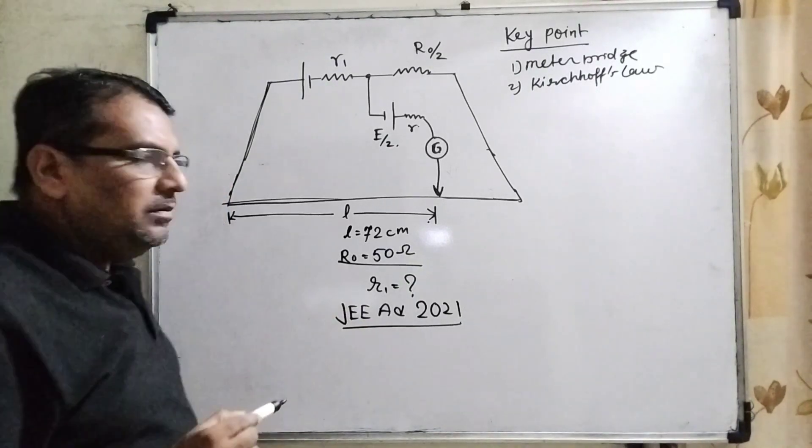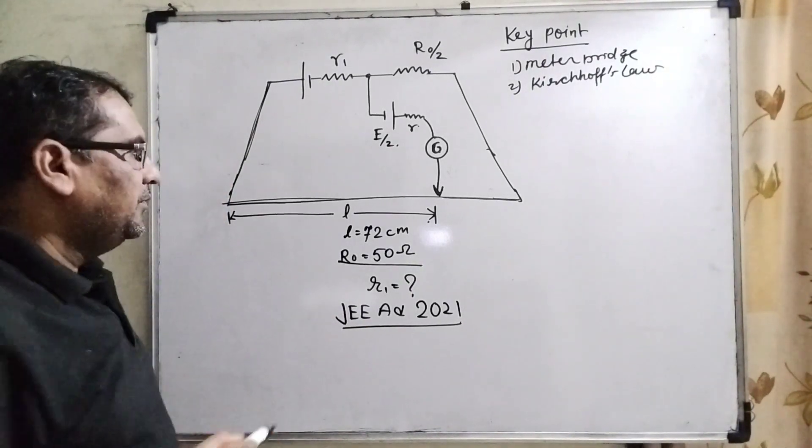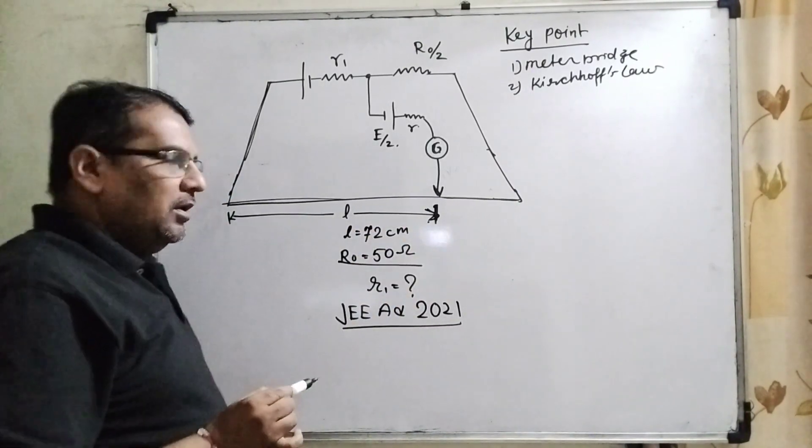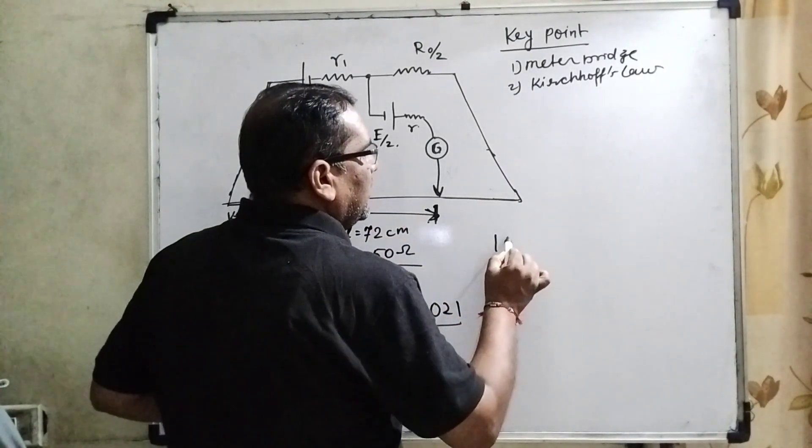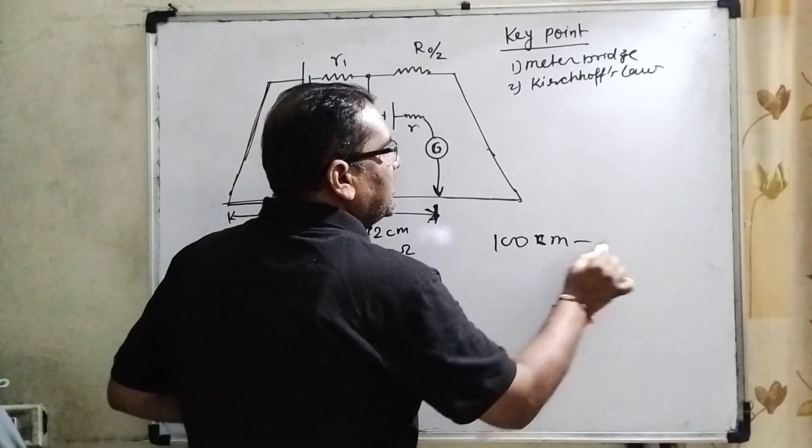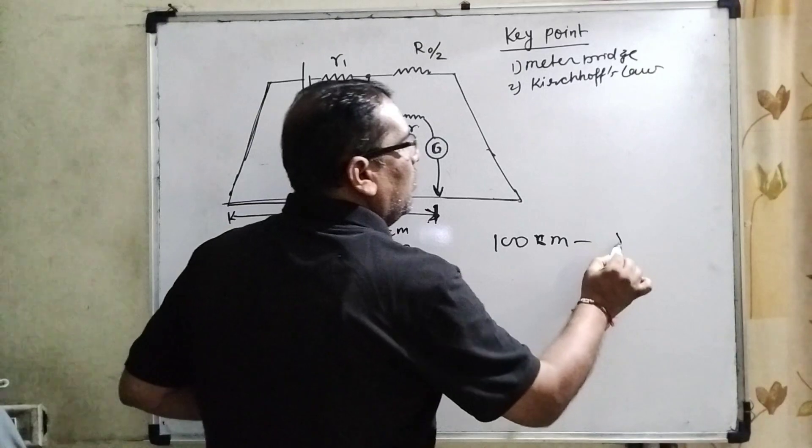By using the unitary method, we can get the resistance of each portion because we know that 100 centimeters resistance is given as 50 ohms.